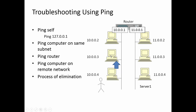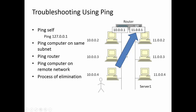If you cannot ping your nearest neighbor, that implies you don't have a connection to the network. If you can, then you do have a connection. Next, ping the near side of the router. If you cannot, that implies the cable has fallen out of the router or the router is not turned on. If you can ping the near side, the cable is plugged in and the router is on. Then ping the far side of the router. If you can ping the near side but not the far side, the router is misconfigured and not forwarding packets. If you can ping the far side, the router is forwarding packets correctly.